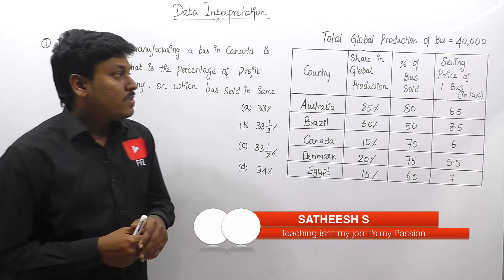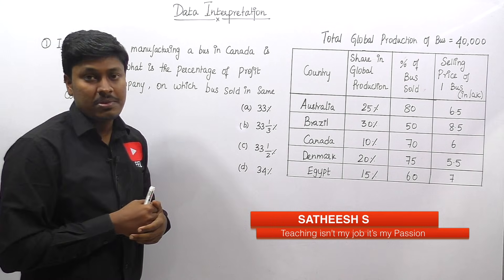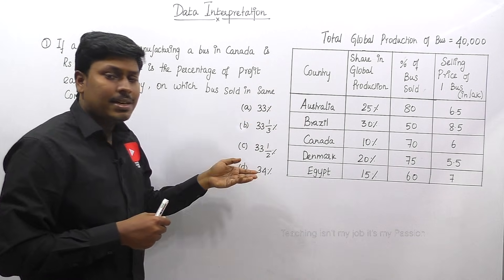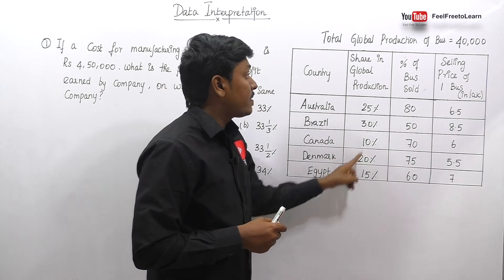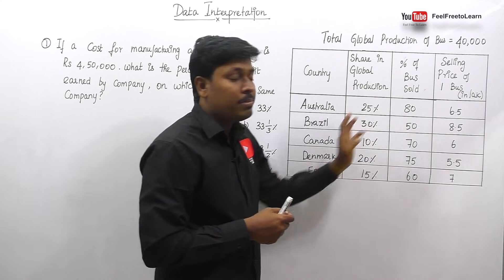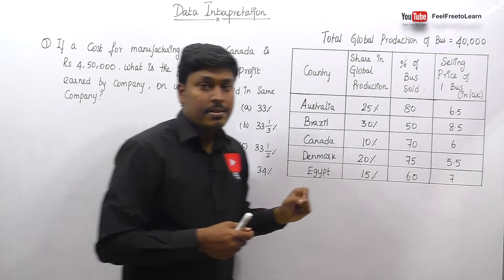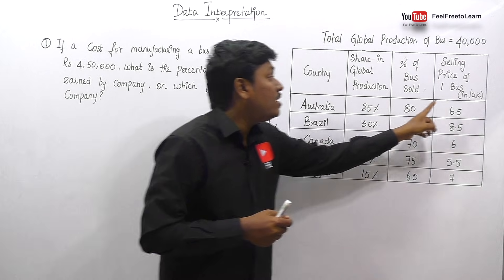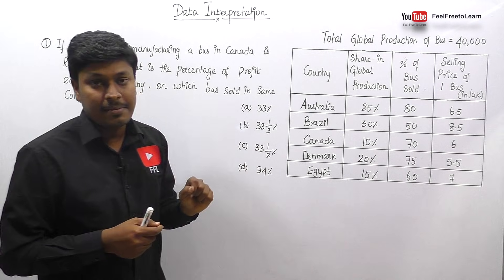Let me move on to the DI question. They have given a table chart, and at the top of the table chart, total global production of buses will be 40,000. The first column shows the country — Australia, Brazil, Canada, Denmark, and Egypt. The second column shows share in global production, all values in percentage. The third column is percentage of buses sold. The fourth column is the selling price of one bus, in lakh — 6.5, 8.5, 6, 5.5, and 7 lakh respectively.